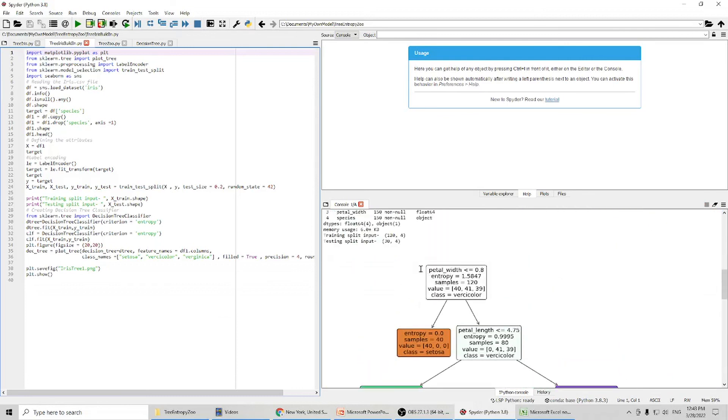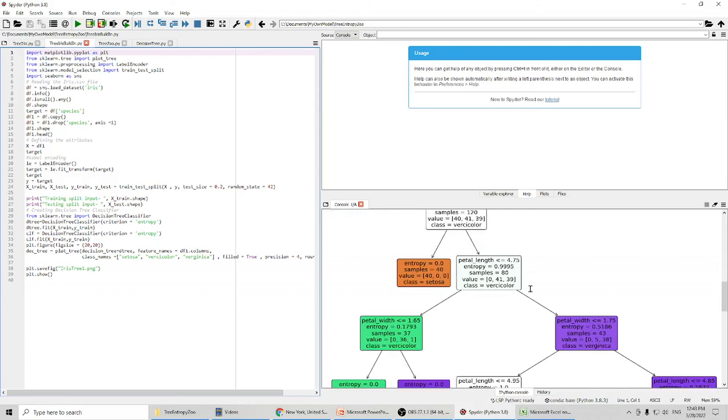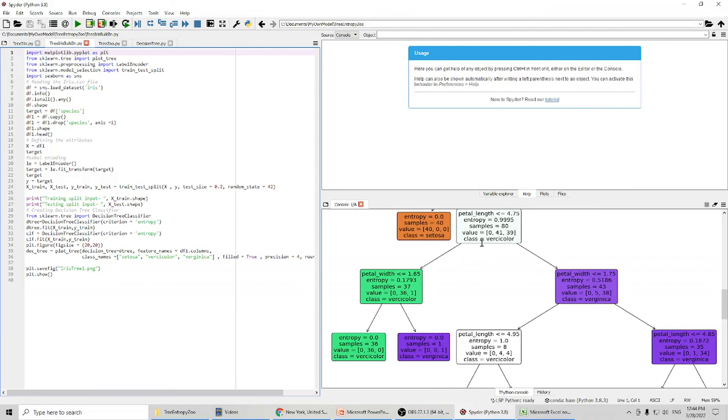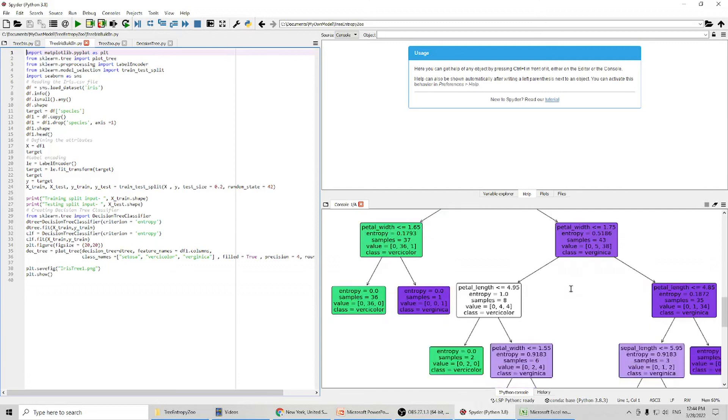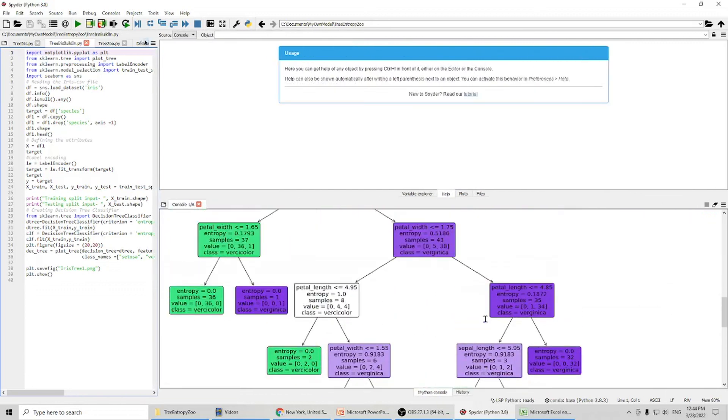You can see this is the criteria for the first step. We split our data points, and the entropy is shown. For this right branch, we are going to split it again with petal length, this condition to the right. And you can classify our data points further with those conditions. Eventually, we can build our decision tree like this.